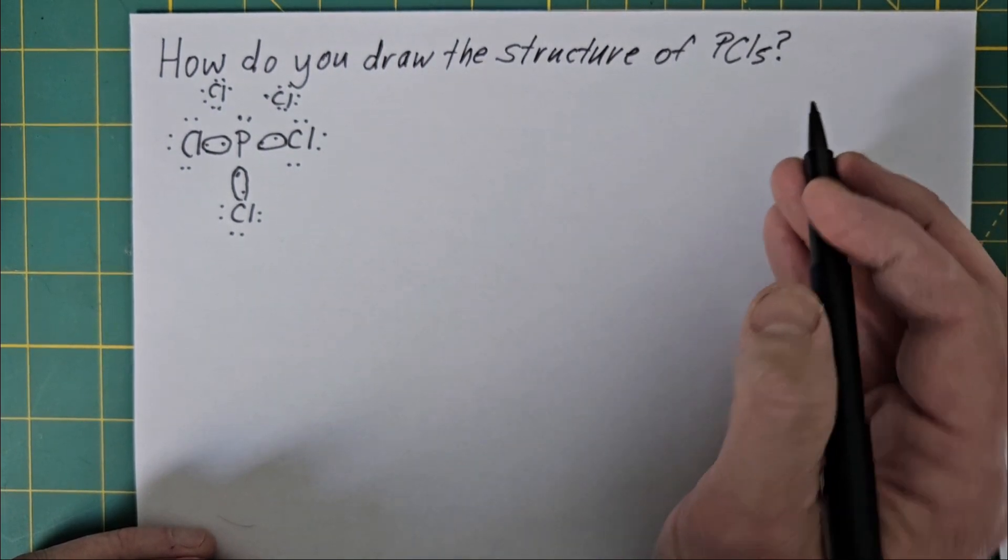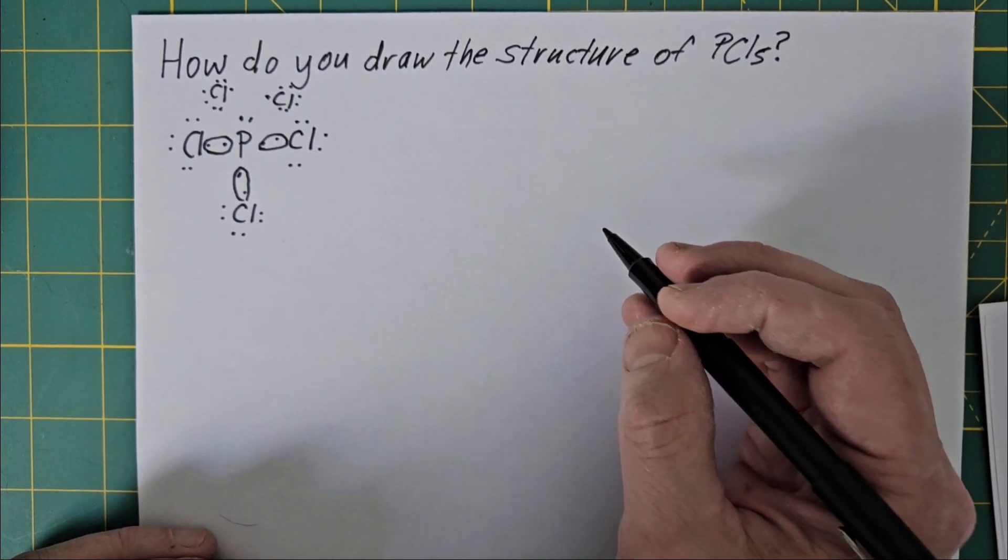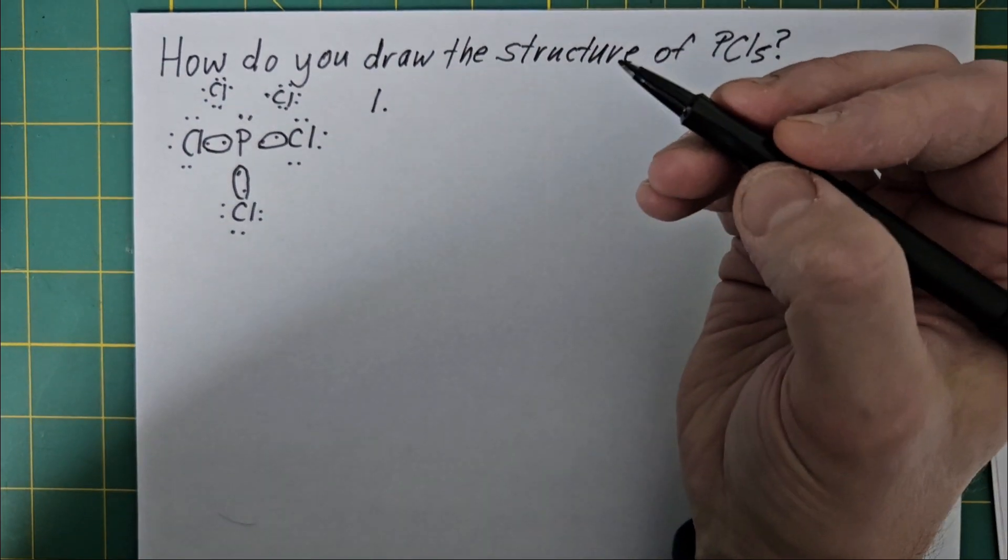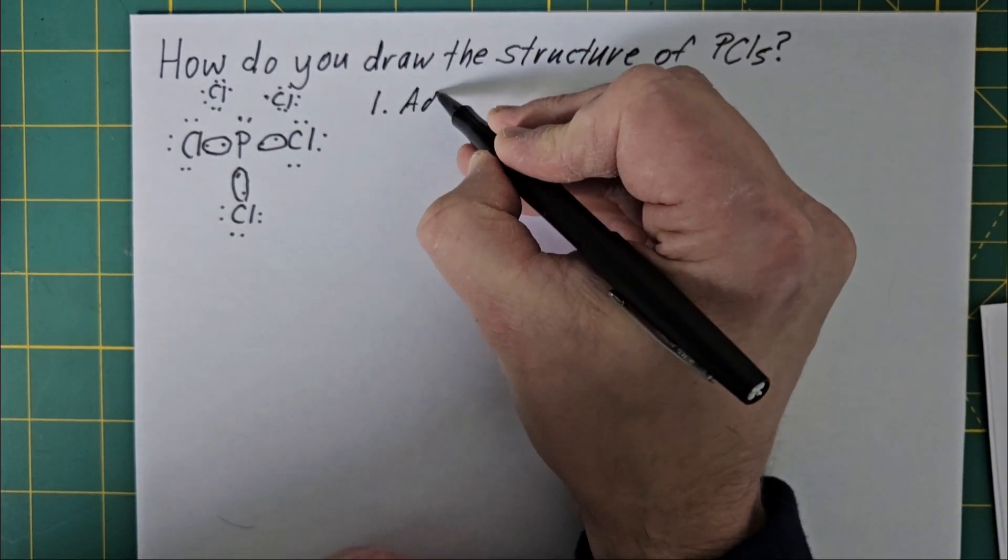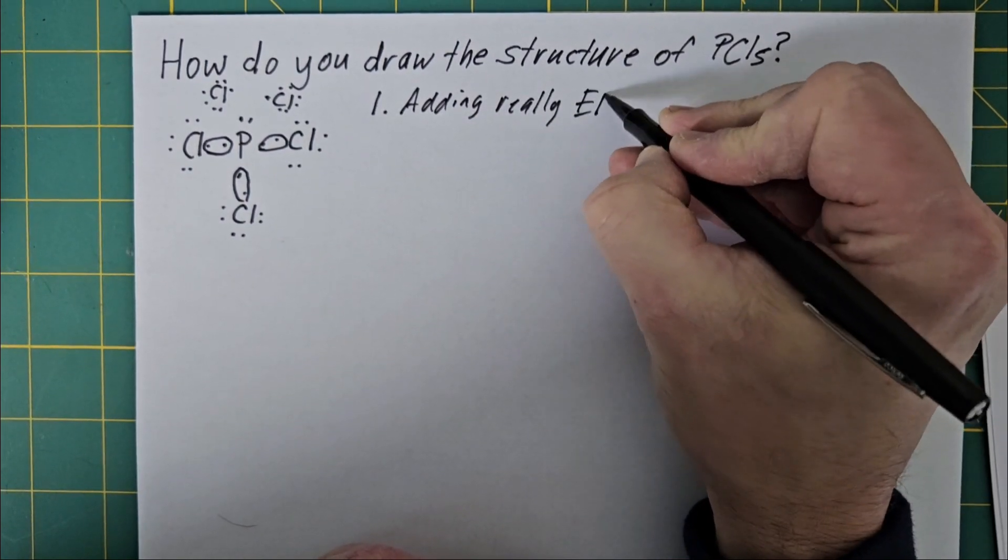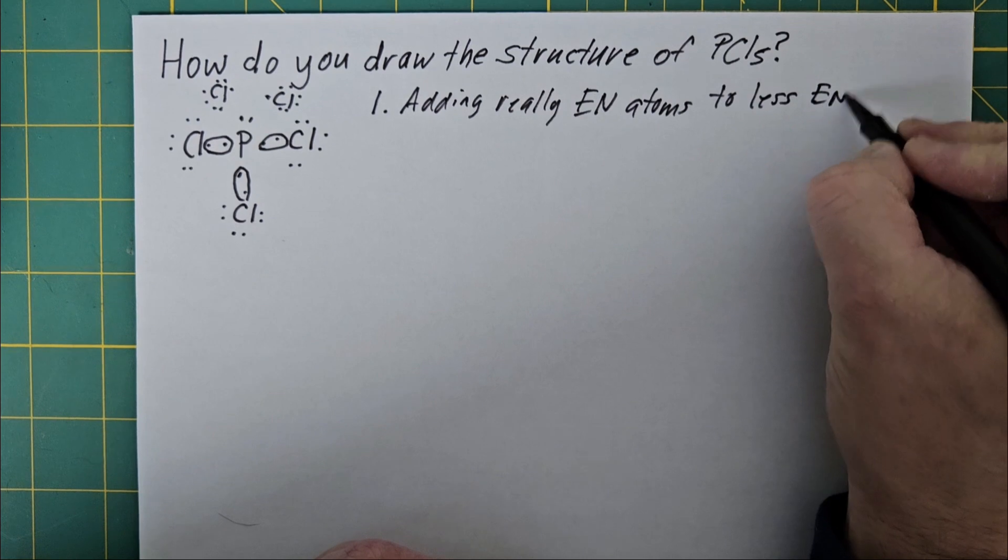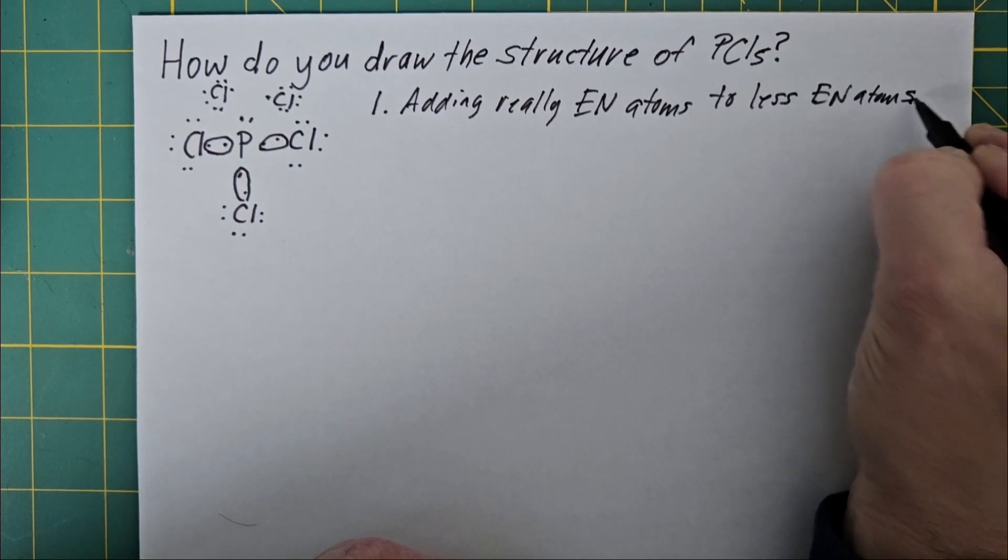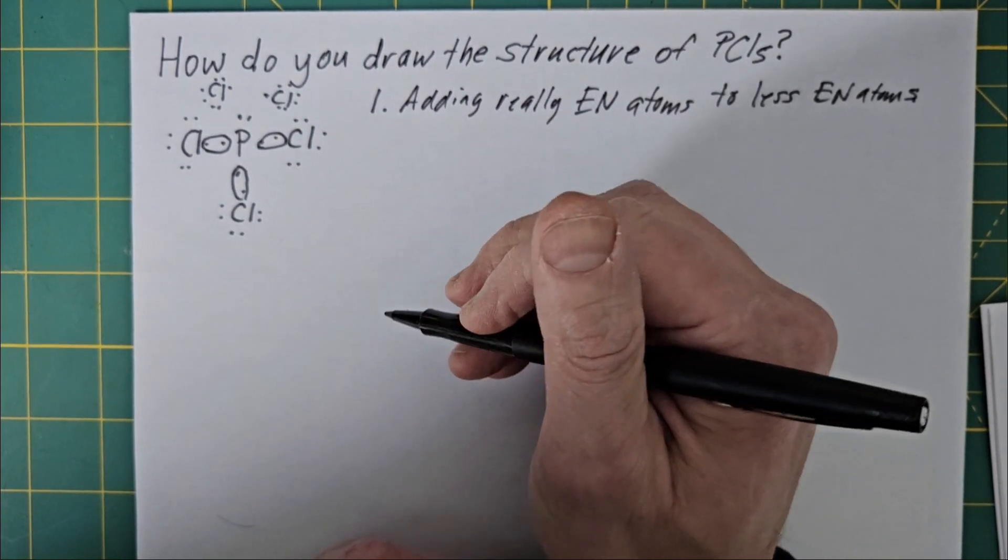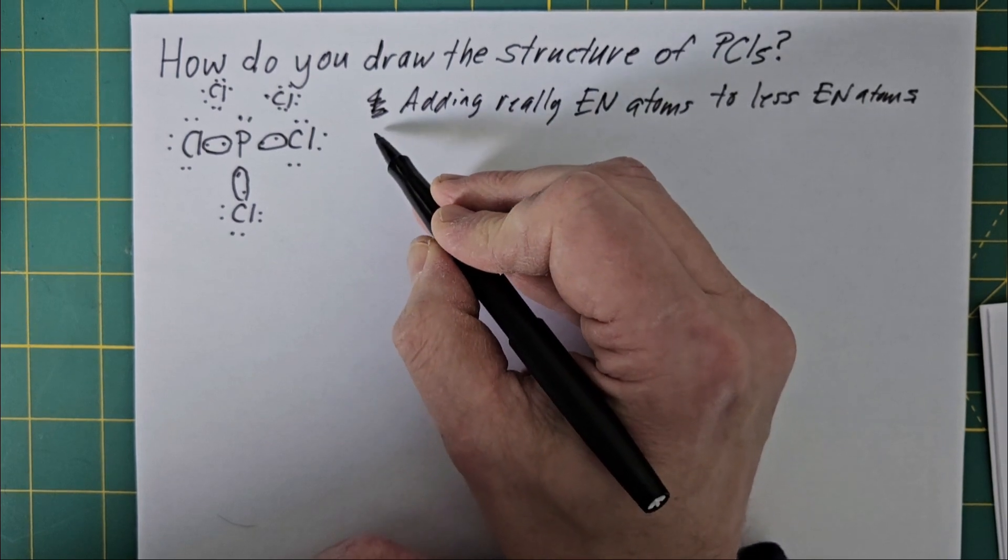So how can we explain how PCl5 is formed? There are two possible explanations. And both explanations will only work if you're adding really electronegative atoms to less electronegative atoms. As in this case, because chlorine is definitely highly electronegative and is definitely more electronegative than phosphorus. So that applies to both explanations.